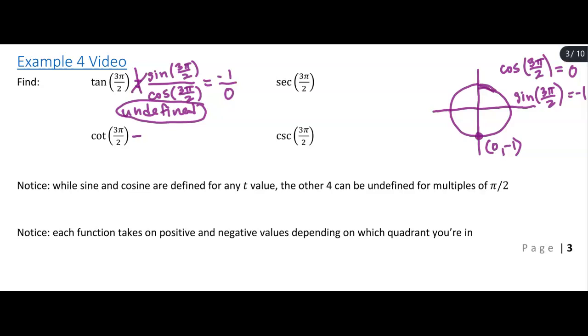Let's try cotangent. Cotangent is the reciprocal of tangent. It's cosine over sine. So if the value of cosine 3 pi over 2 is 0, and the value of sine 3 pi over 2 is negative 1, then the value of cotangent is actually 0 there. So cotangent is defined, but we just get 0.